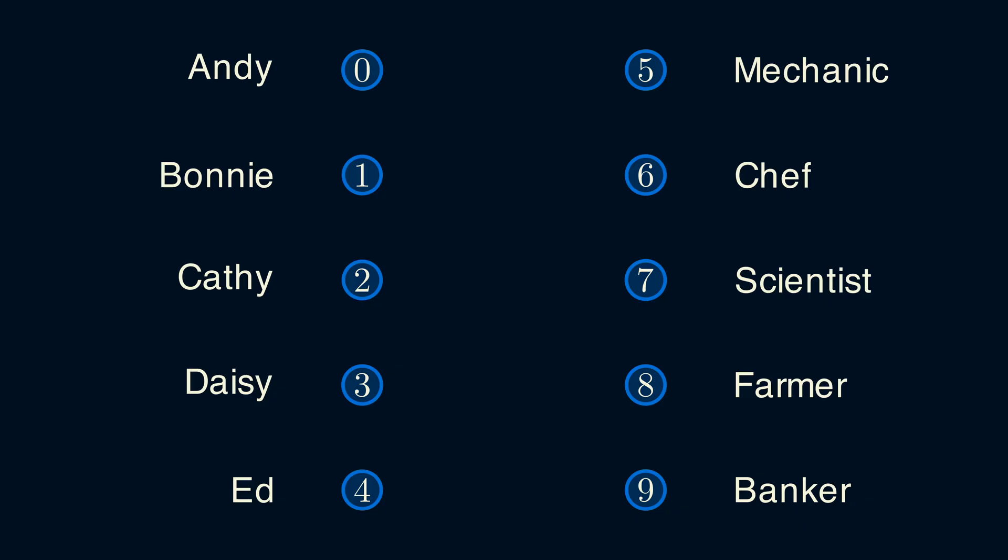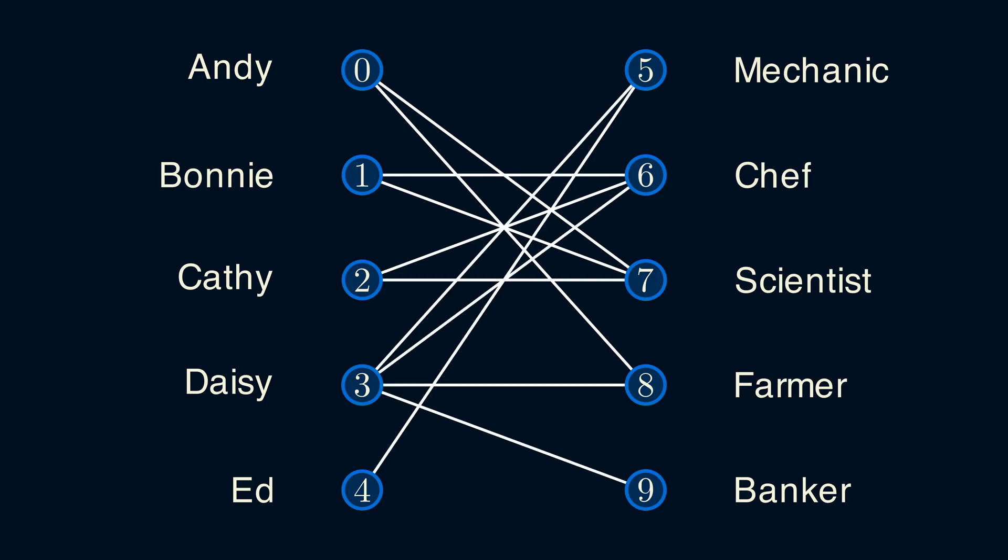What makes this problem complicated is that not everyone can do every job. For example, Andy can either be a scientist or a farmer, and we can represent his options as edges. Bonnie wants to either be a chef or a scientist. And so on. We have a bunch of people with very diverse skills.